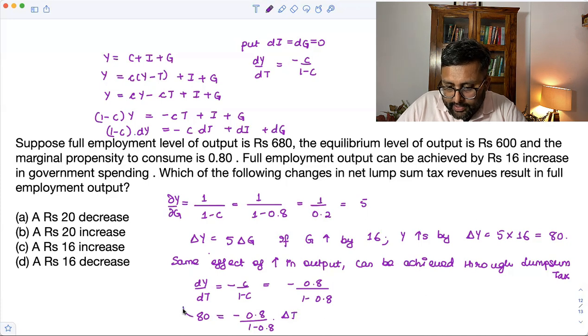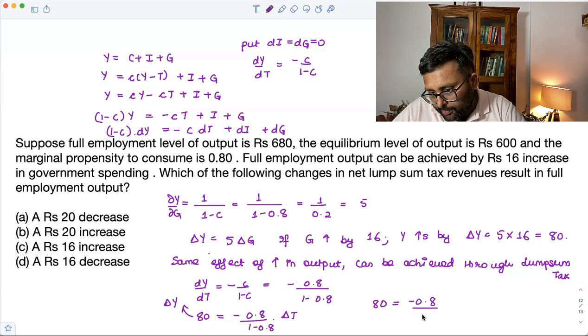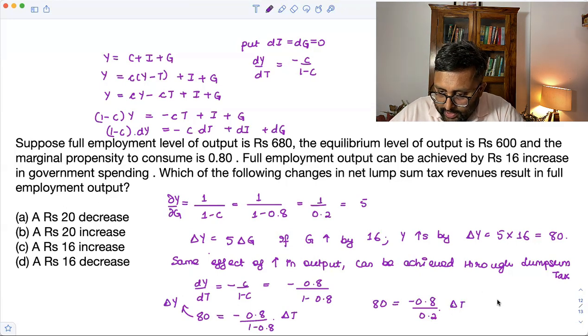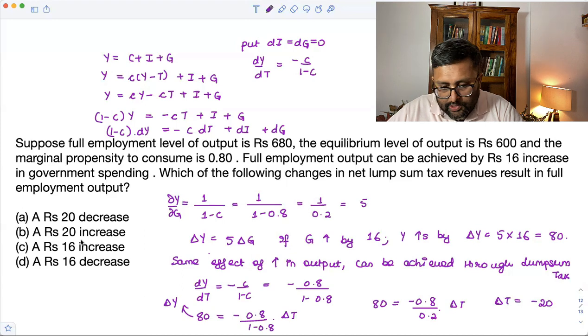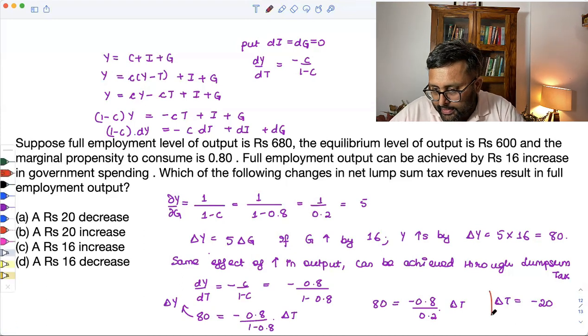So you guys can find out now what is delta T. So it is 80 equals to 0.8 upon 0.2 delta T. So I can find out delta T as minus 20. I can find this out that delta T is minus 20.